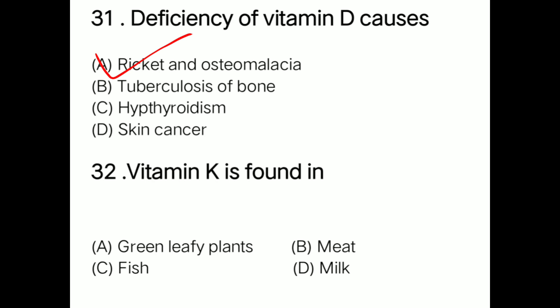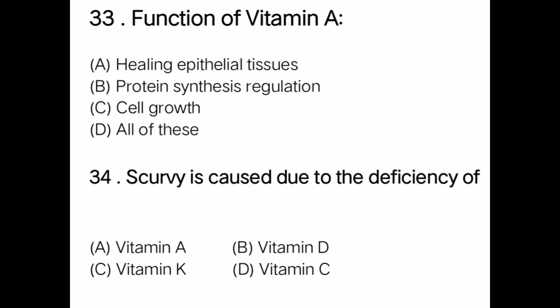Question: Vitamin K is found in option A green leafy plants, option B meat, option C fish, option D milk. Correct answer is option A: green leafy plants.